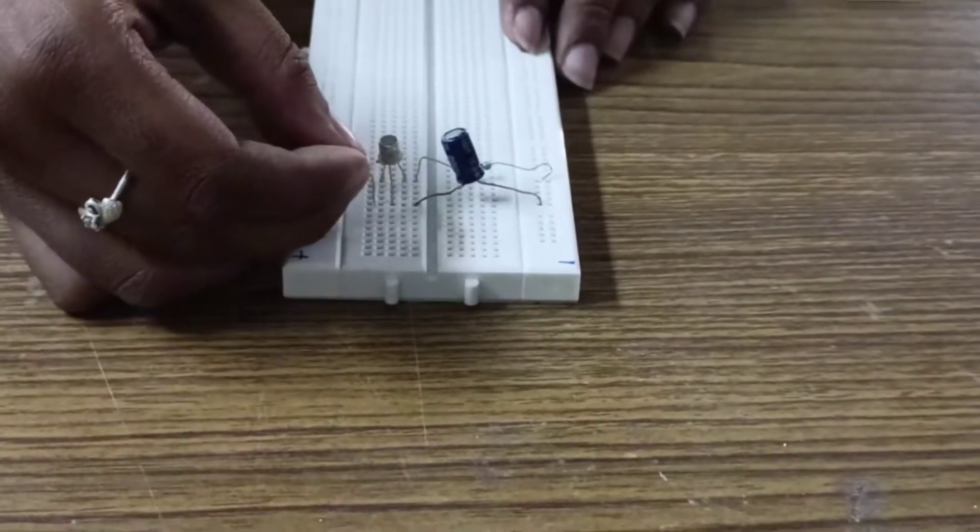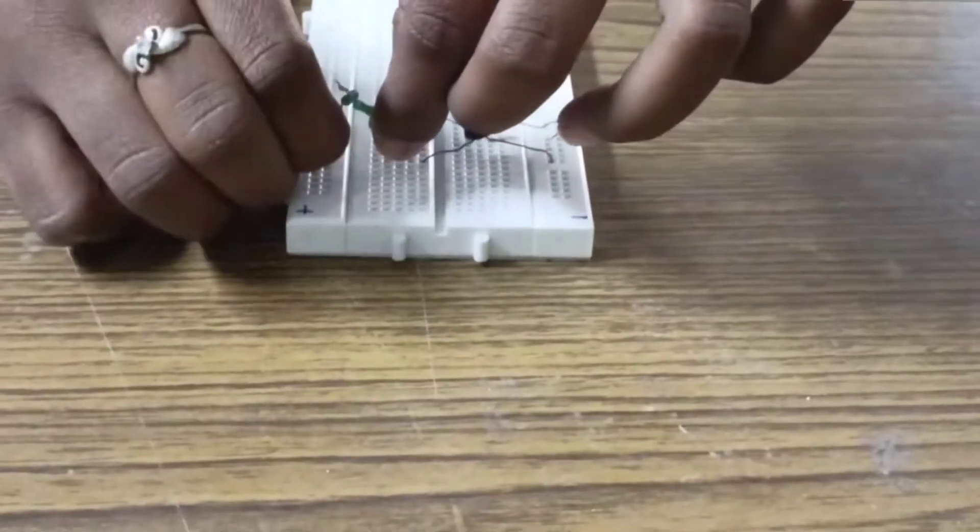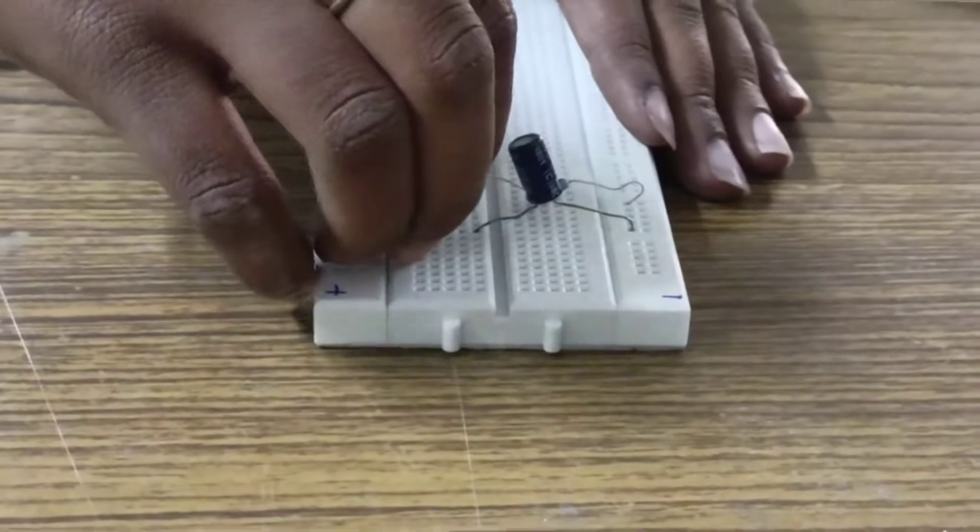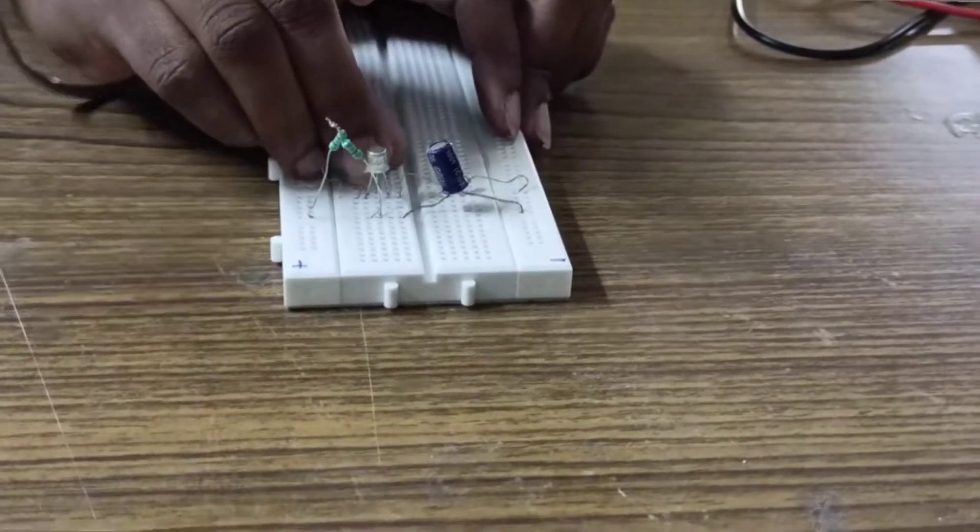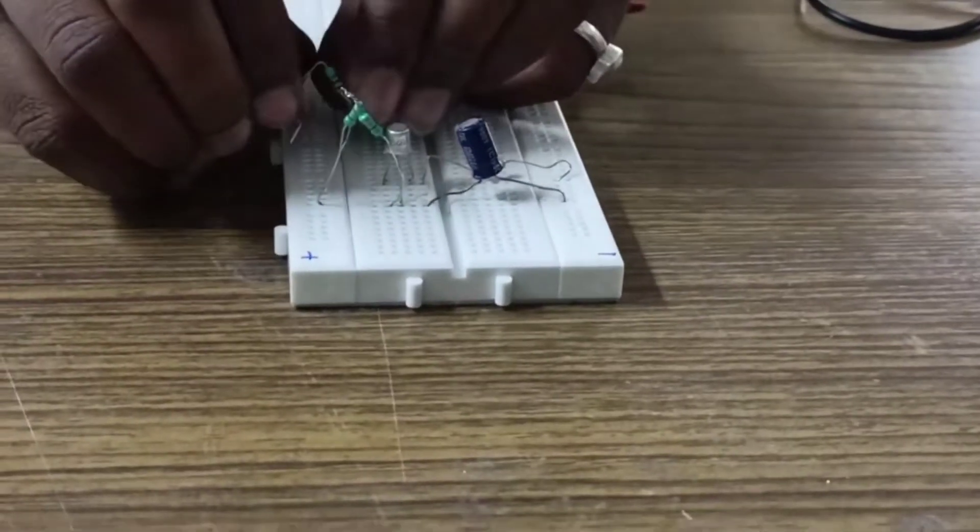Connect the 470 kilo ohm resistor in series with the capacitor and UJT. Then connect the 150 ohm resistor in parallel with the 10 kilo ohm and 240 kilo ohm resistor.